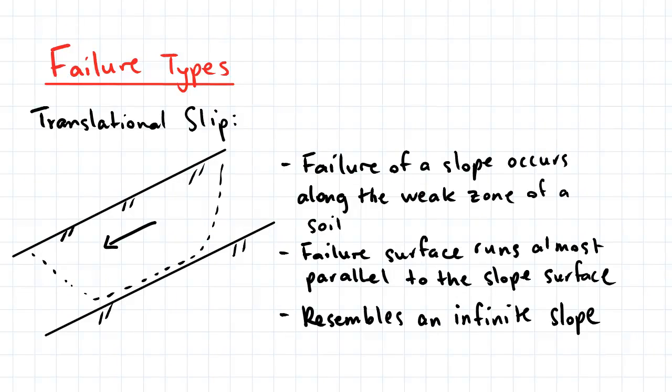Translational slip occurs when the failure surface runs almost parallel to the slope surface. This resembles an infinite slope, which I'll talk more about later.